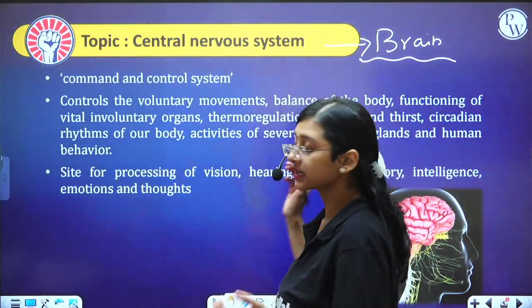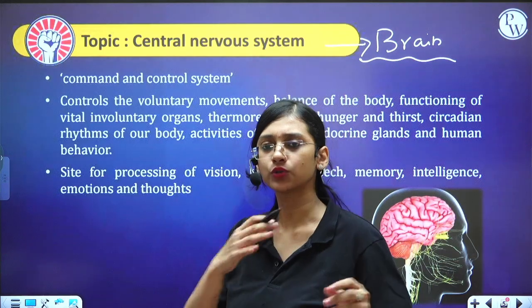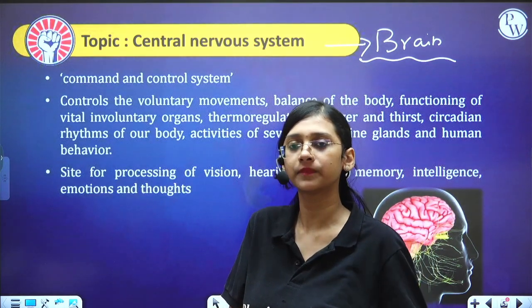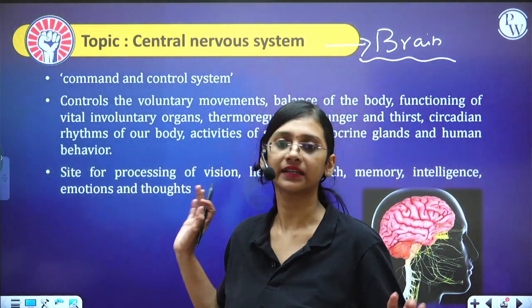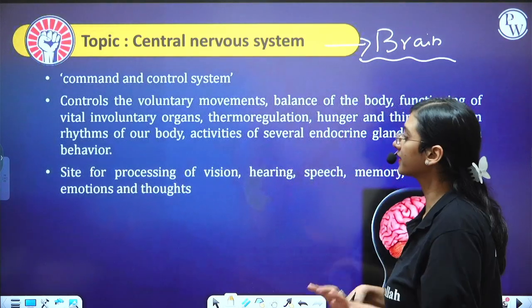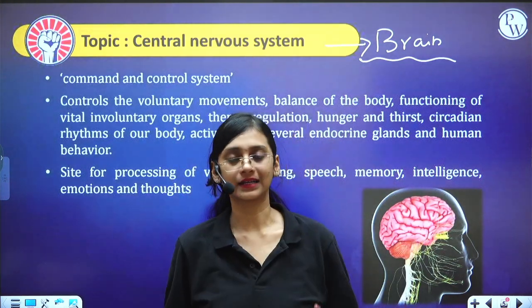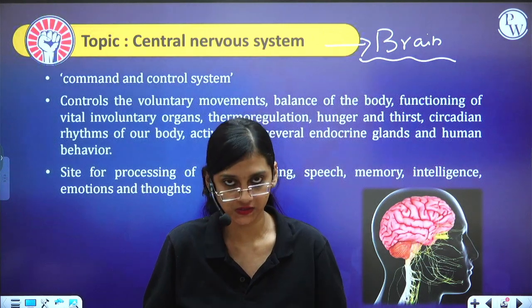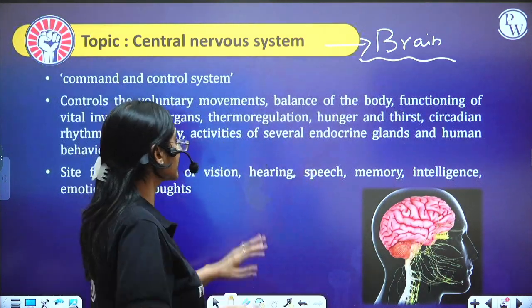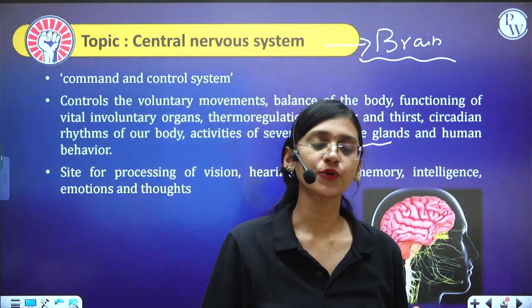Circadian rhythm is controlled by the brain. For example, if you sleep at 10 o'clock every day, your body will automatically feel sleepy at 10 o'clock. The brain also controls the activities of several endocrine glands — these are ductless structures that directly release hormones into the bloodstream.